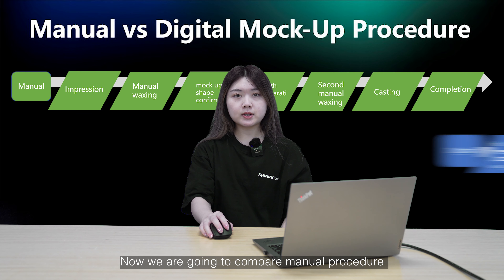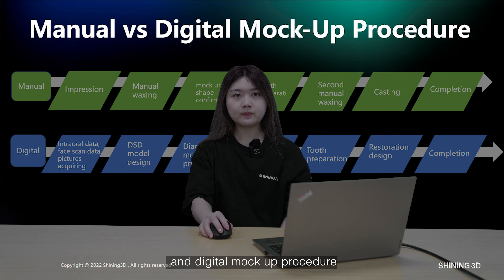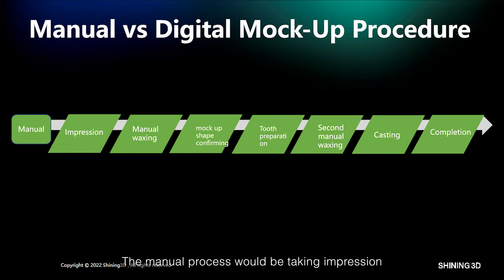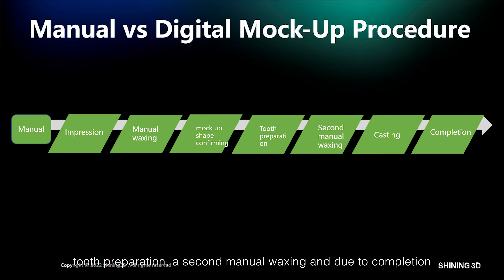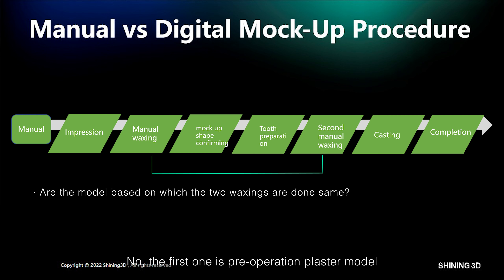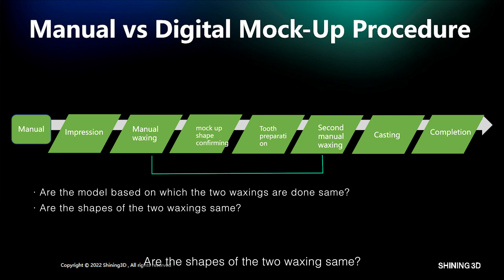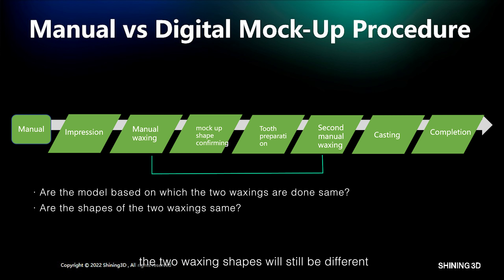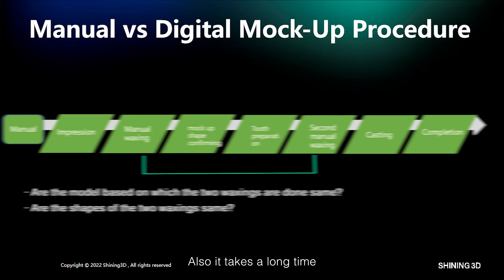Now we are going to compare the manual procedure and digital mock-up procedure. The manual procedure would be: taking impression, manual waxing, mock-up for shape confirming, tooth preparation, a second manual waxing, and then completion. Are the models based on which the two waxings are done the same? No — the first one is a pre-operation plaster model and the second one is a plaster model of the prepared tooth. Are the shapes of the two waxings the same? Even with an auxiliary surgical guide, the two waxing shapes are still different. It highly depends on the technique of the technicians, and also it takes a long time.